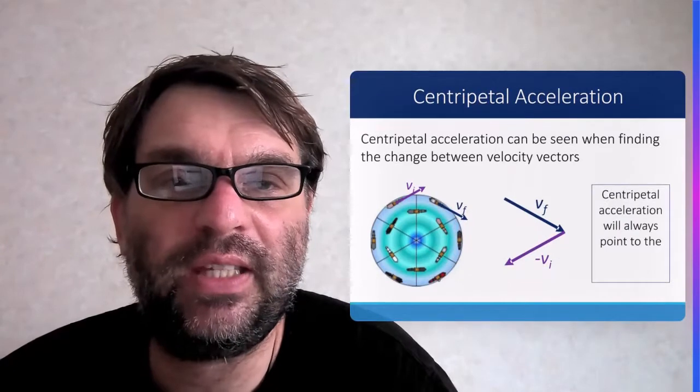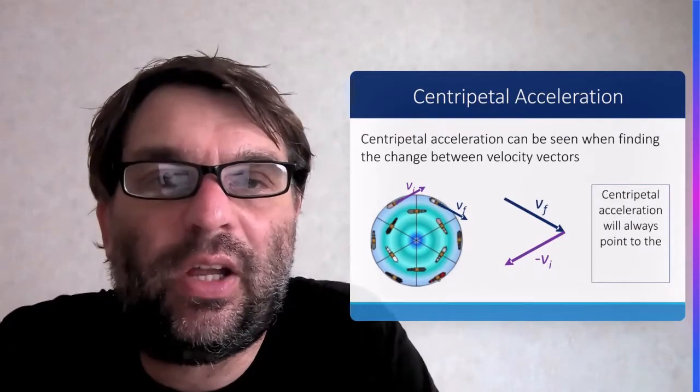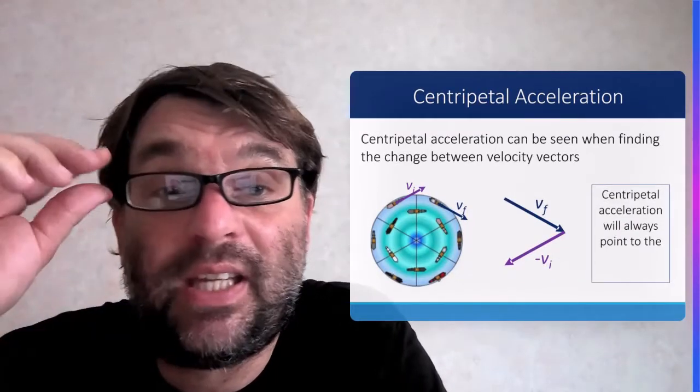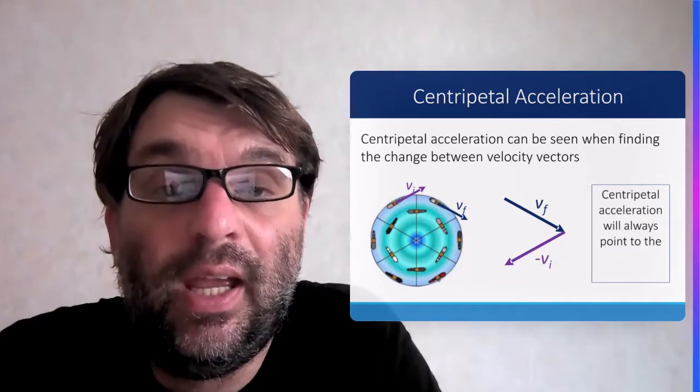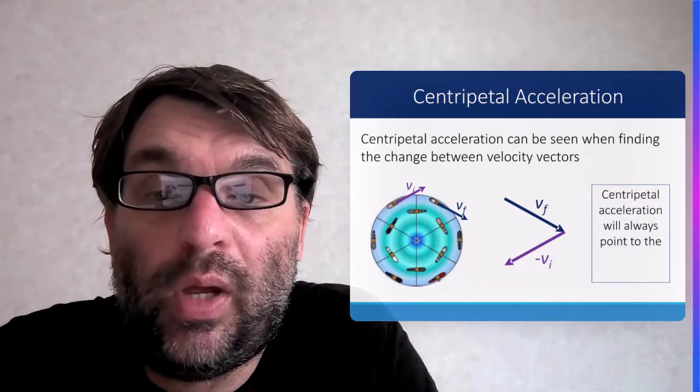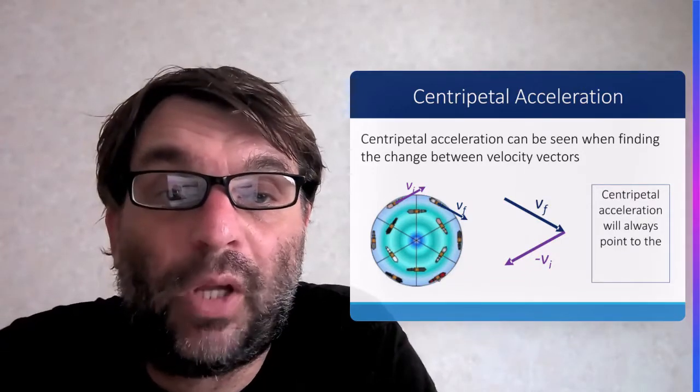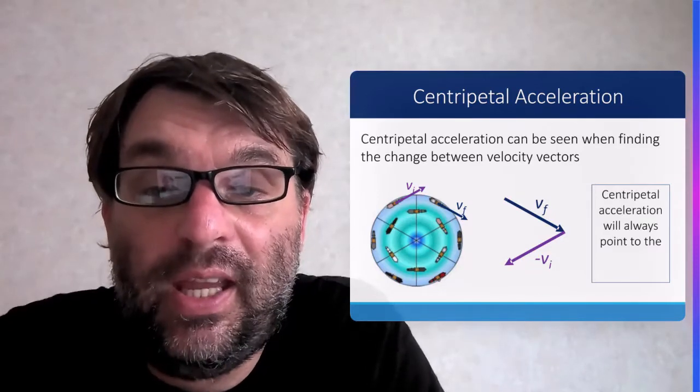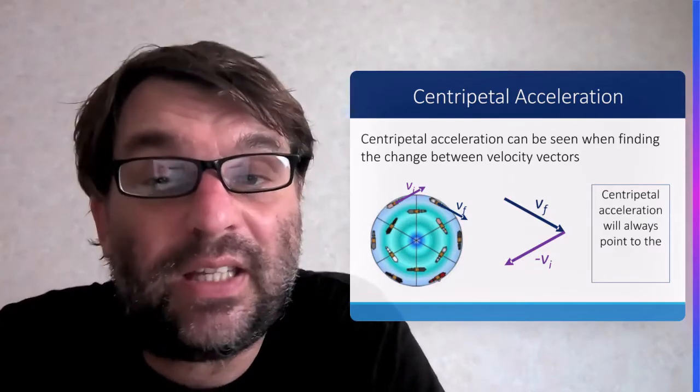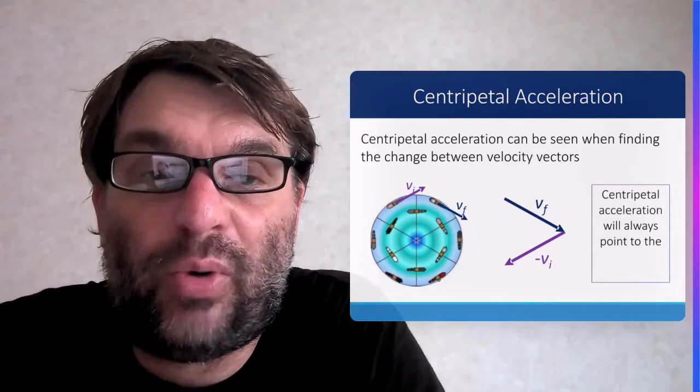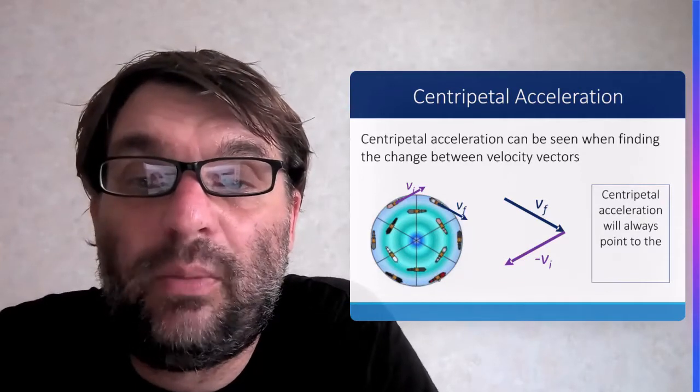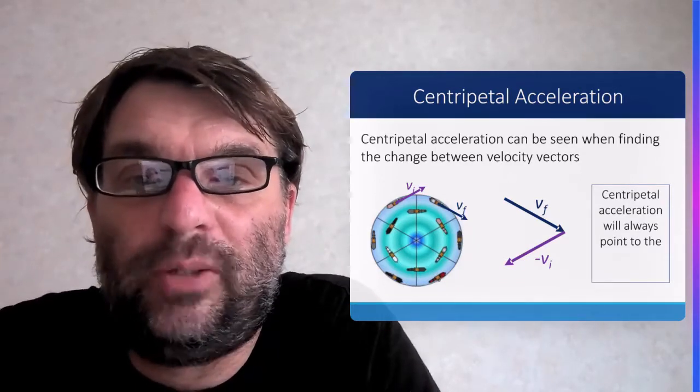So why towards the center? Well, centripetal acceleration can be seen by finding basically the change in velocity in the circular motion. The change in velocity due to the fact that the velocity is a vector will only be changed in direction. So the magnitude or size will be constant, but the direction changes.